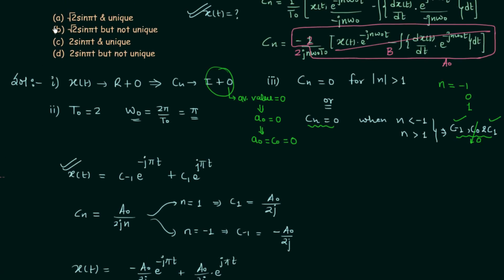Looking at the options: Option A says xt is √2 sin(πt) which is true, but claims it is unique, which is incorrect. Option B says xt is √2 sin(πt) but not unique — this is also true since xt can also equal −√2 sin(πt). So option B is the correct answer. Options C and D are incorrect because the expression of signal xt is wrong. If you have any doubt you may ask in the comment section.